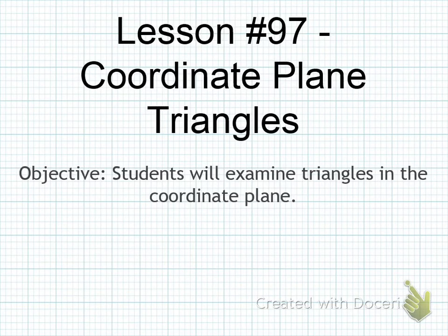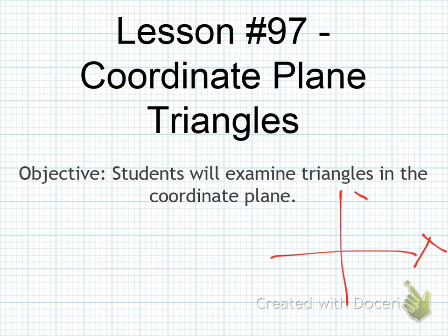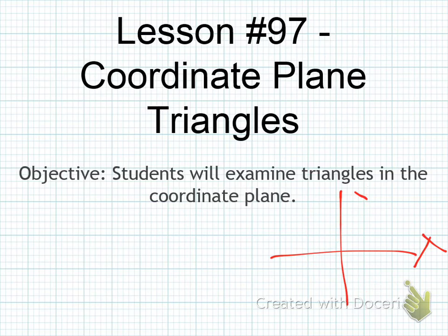Today's lesson is lesson number 97. We're going to be talking about coordinate plane triangles. A coordinate plane is just when you have an X and a Y — these are our coordinate axes and the coordinate plane. You might have a triangle like this or like this. We're going to talk about what we can do with triangles in the coordinate plane.